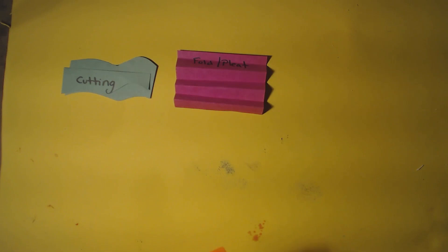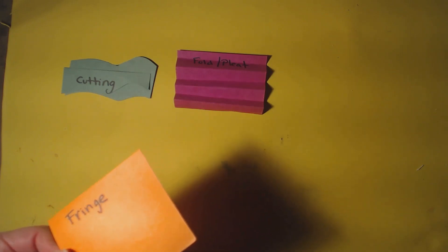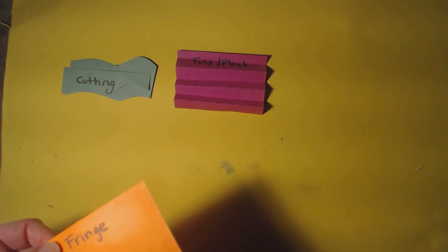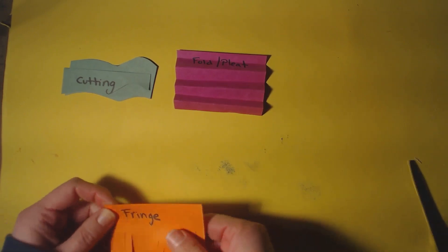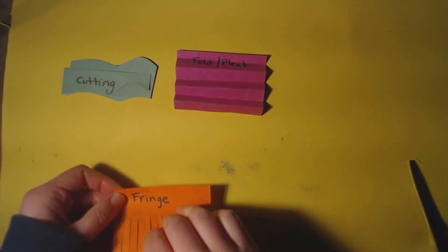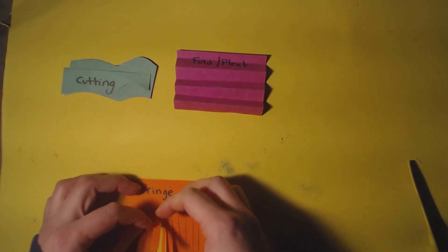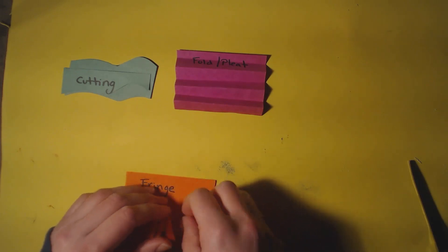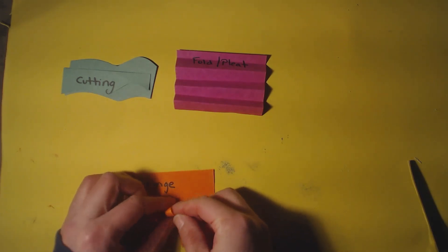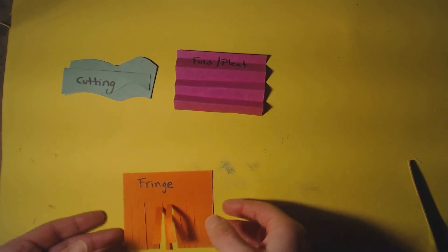The next one is a fun one, fringe. Fringe is where you take a piece of paper and you cut straight lines but you don't go all the way to the top of your paper like this. And then you have all these little pieces of fringe and you can take some of them and you can bend it. You can take some and you can curl it if you want. It's up to you. So that's fringe.